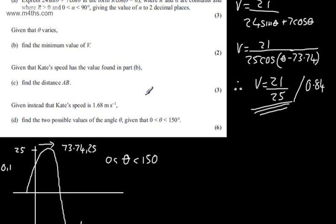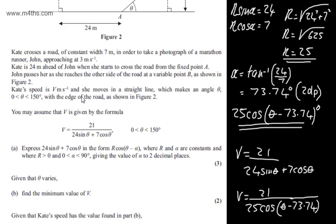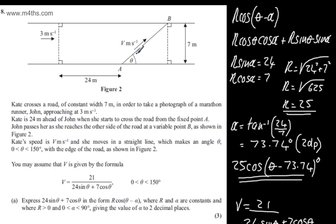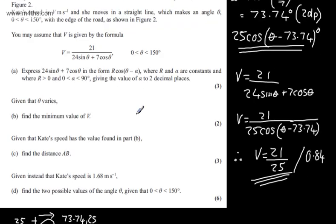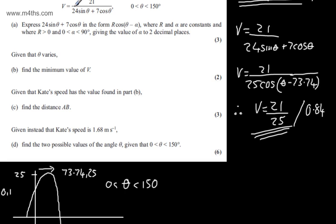So what we're going to do now is the following. Moving on, we're looking now at, it says here, given that Kate's speed has a value found in part B, in part C, for three marks, we need to find the distance AB. Now, we're looking for this distance right here. What we've established is that this is the minimum value. This is where the minimum value occurs. Therefore, I can just use this angle. So all I'm going to do is simply have AB on here, and then we're going to have 73.74.